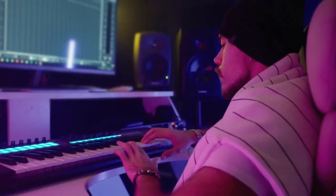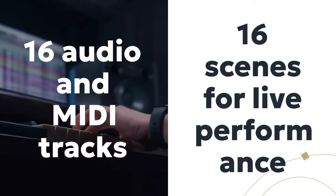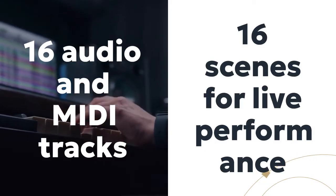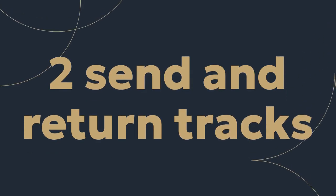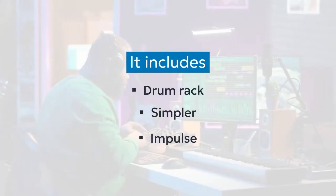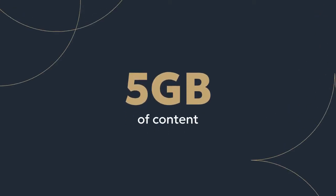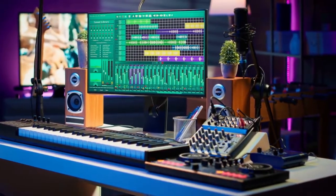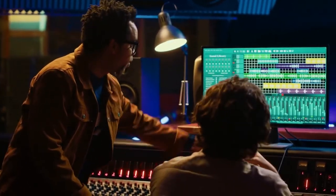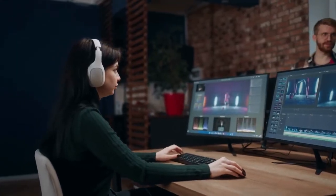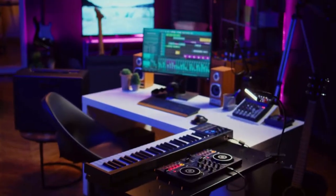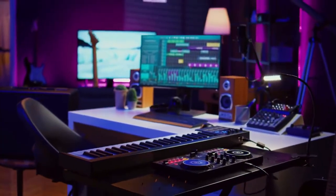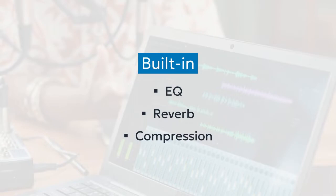So what exactly do you get with Ableton Live 12 Intro Edition? You get 16 audio and MIDI tracks and 16 scenes for live performance, two send and return tracks, Drum Rack, Simpler, and Impulse. You have access to over 1,500 sounds — 5 gigabytes of content — along with basic MIDI and audio effects, multi-track recording, essential MIDI and audio editing tools, time stretching and warping, and basic automation for volume and effects.